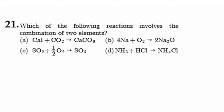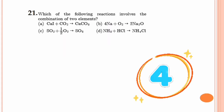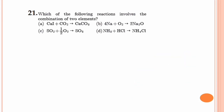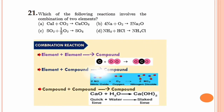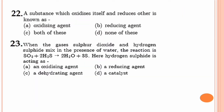Question 21. Which of the following reactions involves combination of two elements? In a combination reaction, two or more reactants combine to form a single product, and it can be of three types: reaction between two elements; reaction between an element and a compound; reaction between two compounds. Option A — calcium iodide and carbon dioxide are two compounds, so that is not the answer. Option B — sodium and oxygen — these are two elements, so option B is our answer.